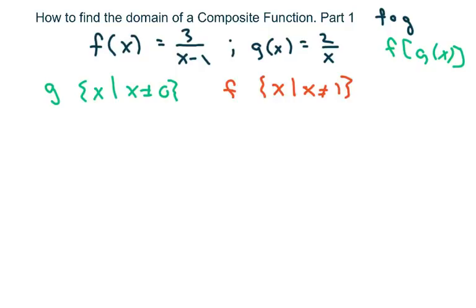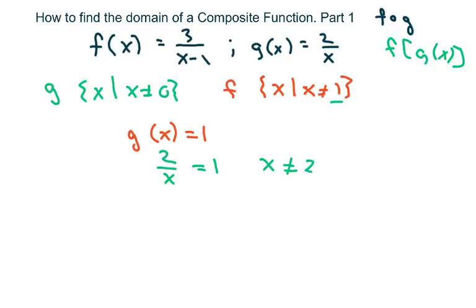What you do next is set your inner function equal to one — the value the domain of f cannot be. So g of x is 2 over x, and you set that equal to one, cross multiply, and get x equals two. That means the domain of the composite function is x such that x cannot be zero and x cannot be two.